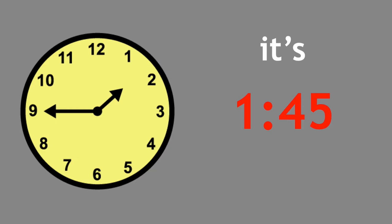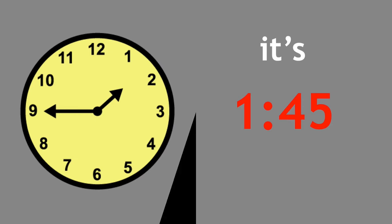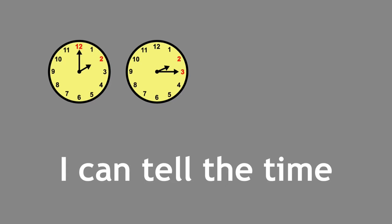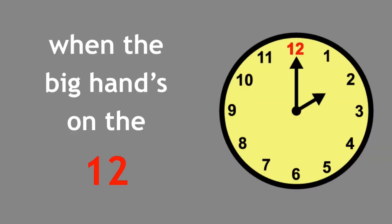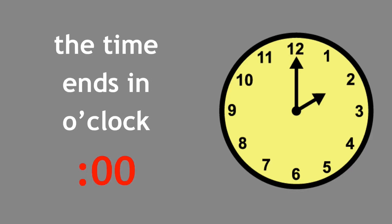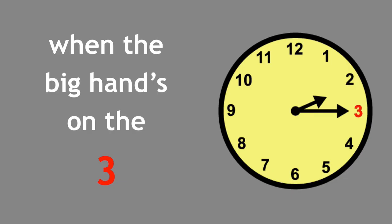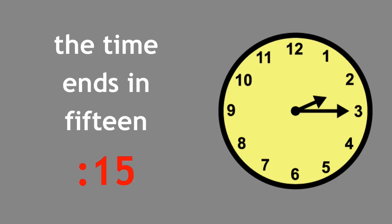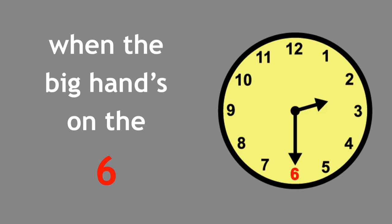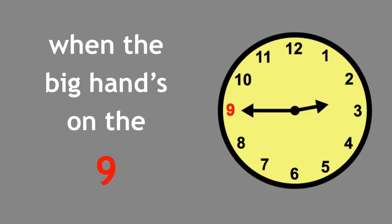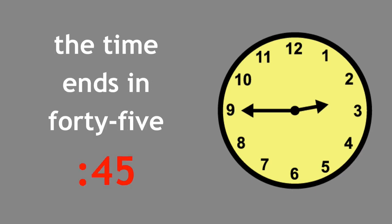Up next, the chorus lyrics are the same, but the visuals are changed to show all of the fifteen minute increments that start with a two. I can tell the time, tell the time, when the big hand's on the twelve. The time ends in o'clock, when the big hand's on the three. The time ends in fifteen, when the big hand's on the six. The time ends in thirty, when the big hand's on the nine. The time ends in forty-five.